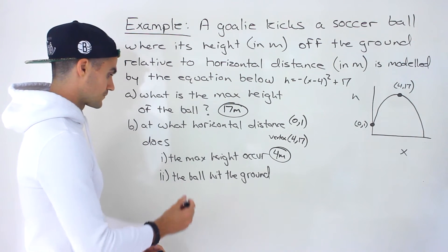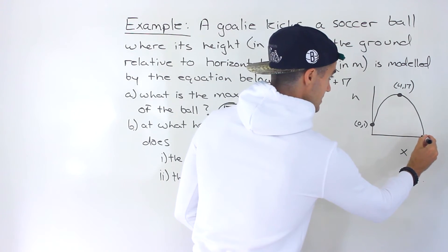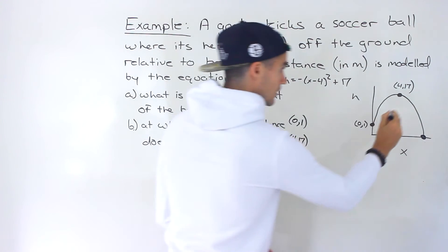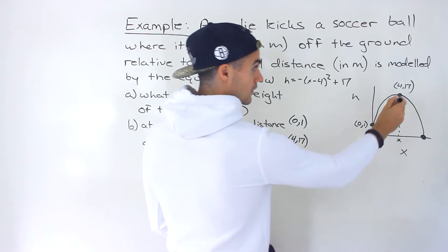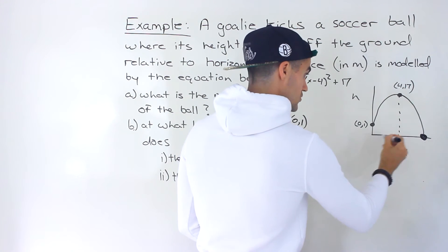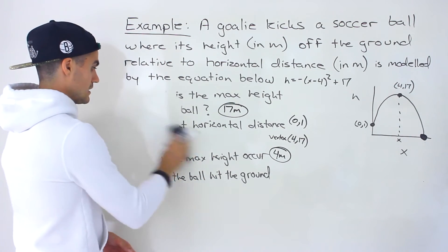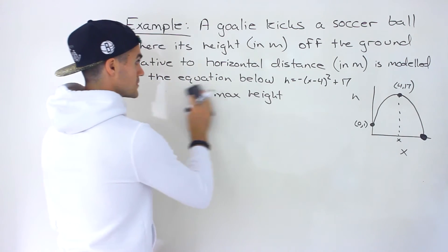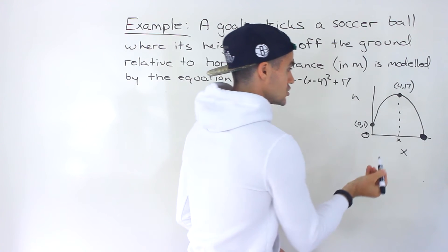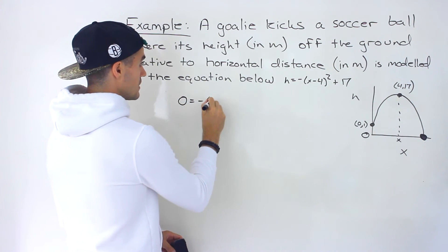Now they're asking for when does the ball hit the ground — at what horizontal distance does the ball hit the ground? That's asking for this x-intercept. At that point, the height is going to be 0. So we plug in 0 for the h value.